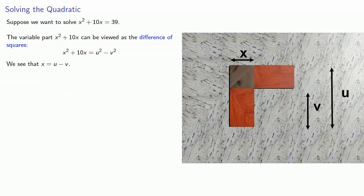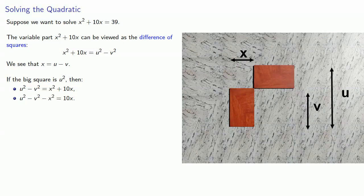But if the big square is u², then u² - v², that gets us our x² + 10x. But if we then subtract x squared, we leave 10x.